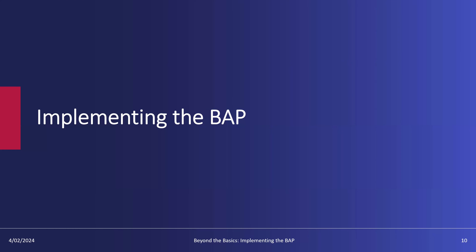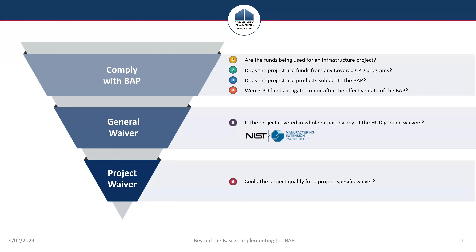Now let's talk beyond the basics about potential approaches to implementing the BABA for CPD-assisted public infrastructure projects. The BABA implementation notice outlines a six-step approach for grantees to analyze if the BABA applies and determine if a waiver is applicable. We've covered these steps in detail in previous webinars and quick guides. During this broadcast, we'll apply these concepts through a case study and other examples. The graphic on screen illustrates the types of analysis that should occur in each of the three assessment areas.